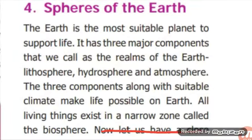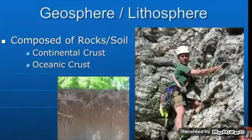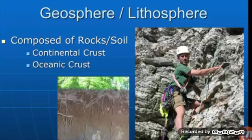First one, lithosphere. The word lithosphere is derived from the Greek word lithos, which means rocky. The lithosphere is the land on which we live. It is the solid outer layer of the earth consisting of rocks and soil. The solid portion of the earth on which we live is called the lithosphere.